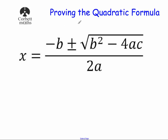In this video we're going to prove the quadratic formula. You've probably used it in loads of maths lessons, or you may have just been introduced to it by your teacher. The quadratic formula is x equals negative b plus or minus the square root of b squared minus 4ac, all divided by 2a. You may have just been given it, but where does it come from?